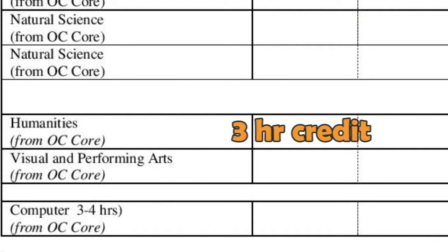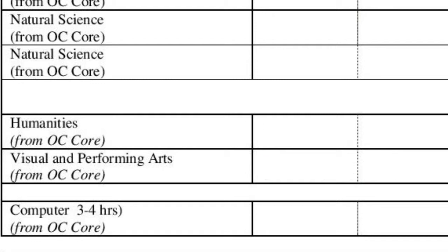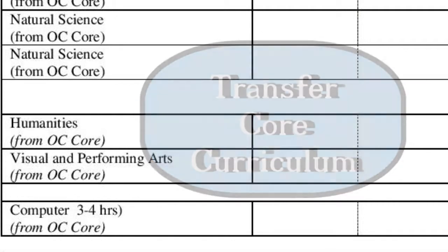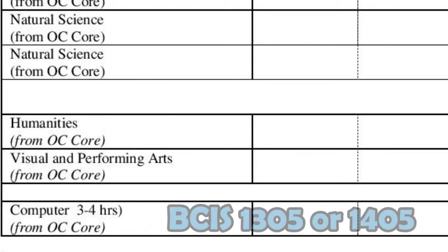In the next section, you need a three-hour Humanity Credit and a three-hour Visual and Performing Art Credit. You can pick any classes listed in Odessa College's catalog under Transfer Core Curriculum in these categories. Under the Computer Requirements, you will need to take either BCIS 1305 or BCIS 1405.